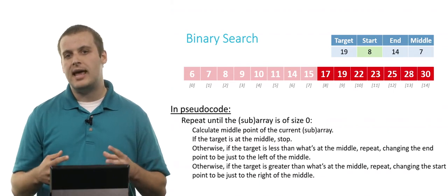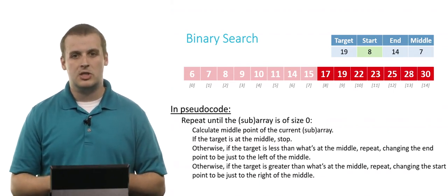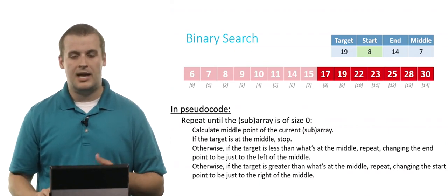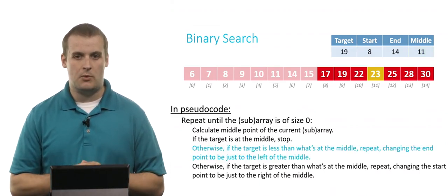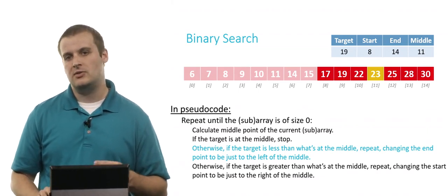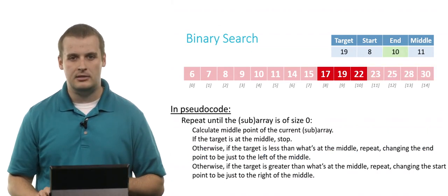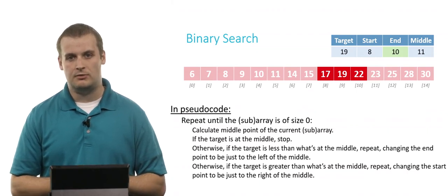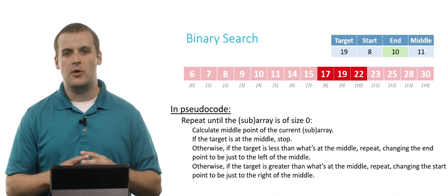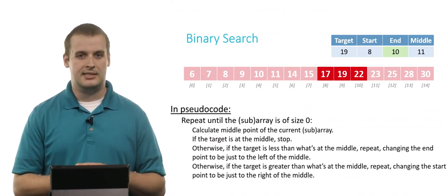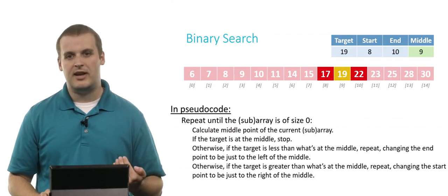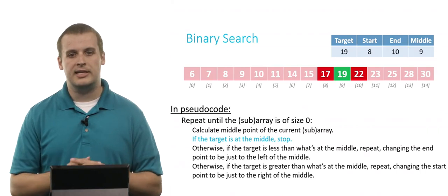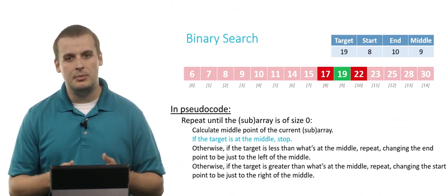Instead of searching over 15 elements, we only have to search over 7. Start is 8, end is still 14. We calculate the new midpoint: 8 plus 14 is 22, divided by 2 is 11. Is 23 what we're looking for? No — we're looking for a value less than that, so we change the endpoint to just to the left of the midpoint, making the new endpoint 10. Now we calculate the midpoint again: 8 plus 10 is 18, divided by 2 is 9. And look — the target is at the middle. We found exactly what we were looking for. Binary search complete.